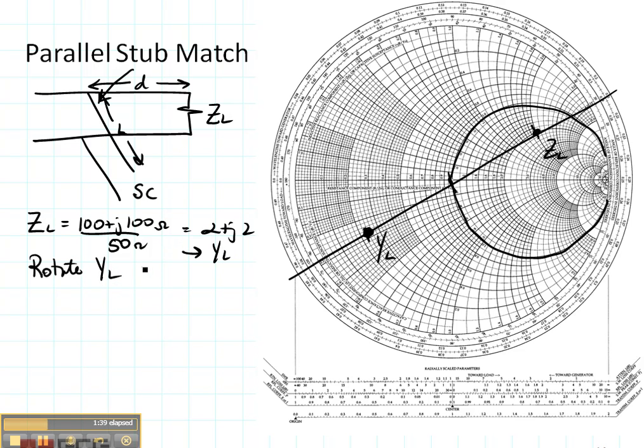Rotate YL towards the generator to the matching circle. So here I am rotating towards the generator. Here we go around towards the generator. Again, if you had a protractor, put the center of your protractor right here, put the pencil part and draw your circle. But as usual, I didn't bring my protractor, so I'm going to use just a piece of paper. I'm going to center it here at the center of the Smith chart, and then I'm going to line up my distance right there.